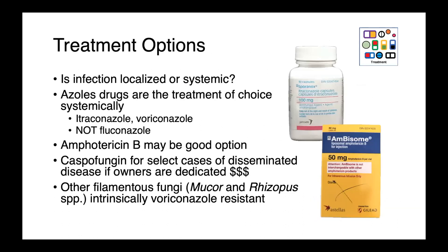When treating these infections, the first question is whether the infection is systemic or localized, with localized being by far the most common in companion animals. Azoles are the treatment of choice systemically — either itraconazole or voriconazole. Fluconazole is not active against Aspergillus. Amphotericin B may be another good option, and in cases of disseminated disease with very dedicated owners, caspofungin may be a reasonable adjunctive therapy. Other filamentous fungi such as Mucor or Rhizopus species are intrinsically voriconazole resistant, which is why getting at least a genus-level ID is really important for guiding therapeutic selection.